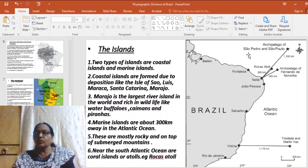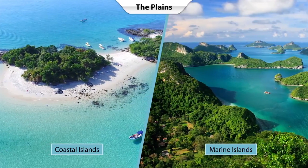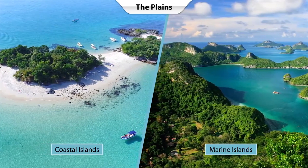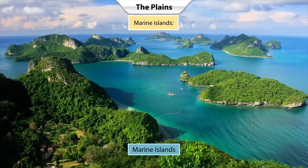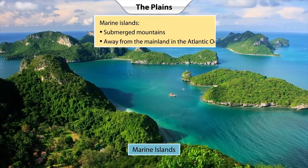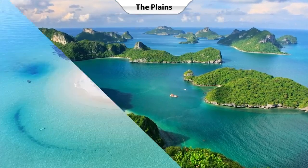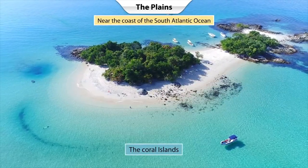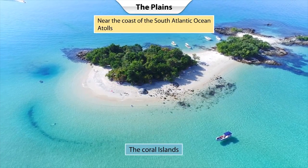Brazil has many marine islands, usually rocky peaks of submerged mountain chains, or atolls and coral islands. There are also archipelagos like Sao Pedro and Fernando de Noronha. The islands of Brazil are classified into coastal islands and marine islands. Marine islands are submerged mountains more than 300 kilometers away from the mainland in the Atlantic Ocean. Coral islands near the coast of the South Atlantic Ocean are called atolls.